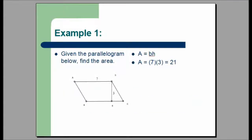Here is example one. Given the parallelogram below, find the area. Recall that area A equals BH. We simply substitute: the base is 7, the height is 3. We have A equals 7 times 3, and the area is 21 square units.